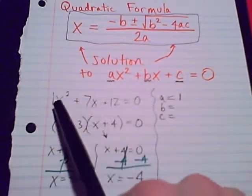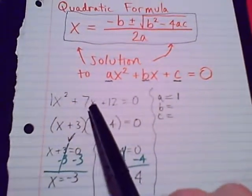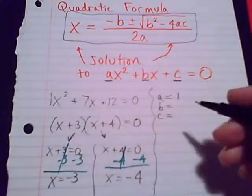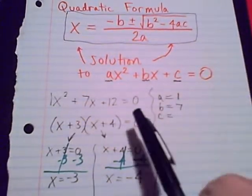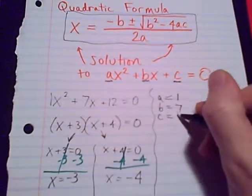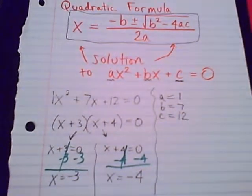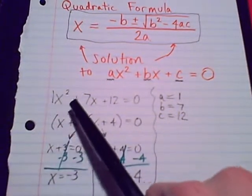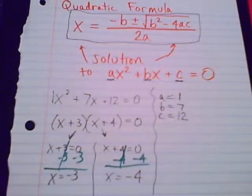b, coefficient on x. So there's our x term. The coefficient is a positive 7. There's our constant, positive 12, and that's the c. So we've decided a, b, and c are 1, positive 7, positive 12.